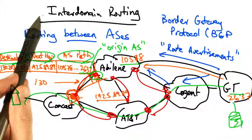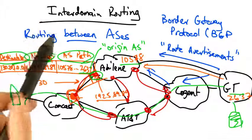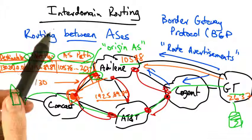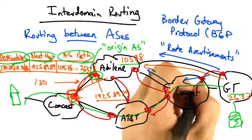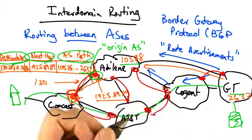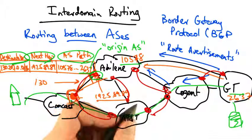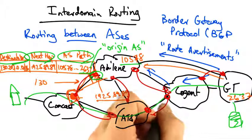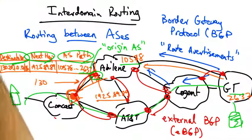Thus far, we've talked about inter-domain routing — BGP, or the Border Gateway Protocol — as consisting of route advertisements solely between border routers of adjacent autonomous systems. In fact, this is a specific type of BGP called external BGP, or eBGP.